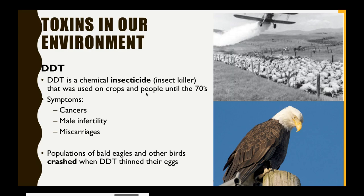After a while they found out that DDT is not very good for humans or other animals in high dosages. There were many symptoms including different cancers, male infertility, and miscarriages among the human population as well as animals. Another interesting impact was on large animals of prey, particularly birds like bald eagles. DDT was actually thinning their eggshells, so as the birds sat on them they would break, causing them to have no offspring. This was the reason for the big bald eagle population crash in the United States. DDT has since been banned in the 1970s, but it's still important to recognize how these chemicals impact our environment.